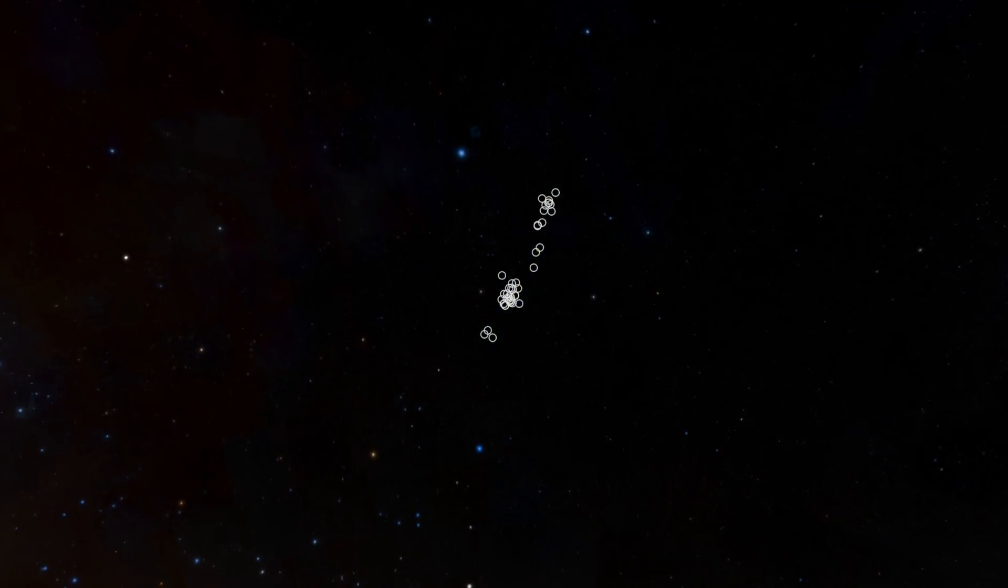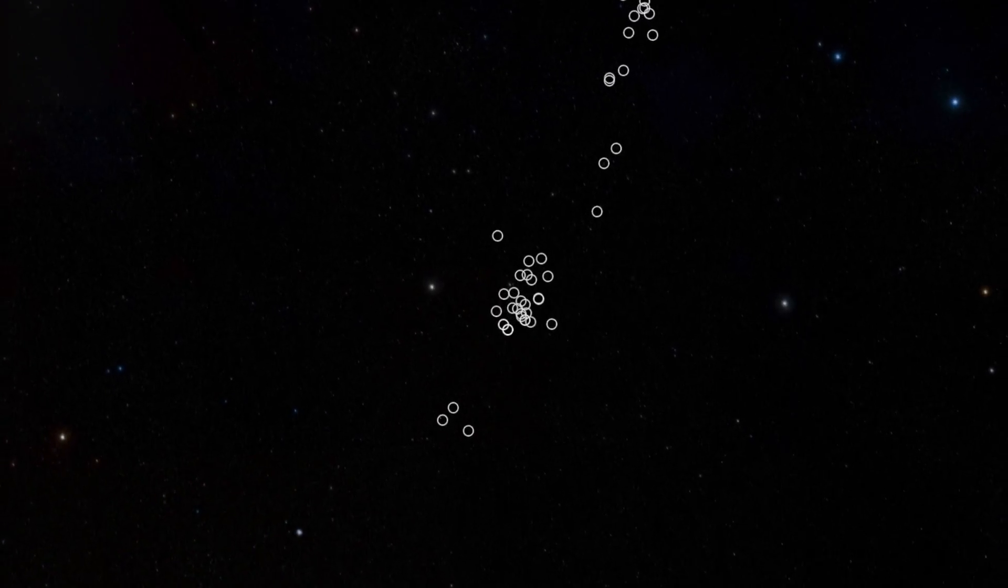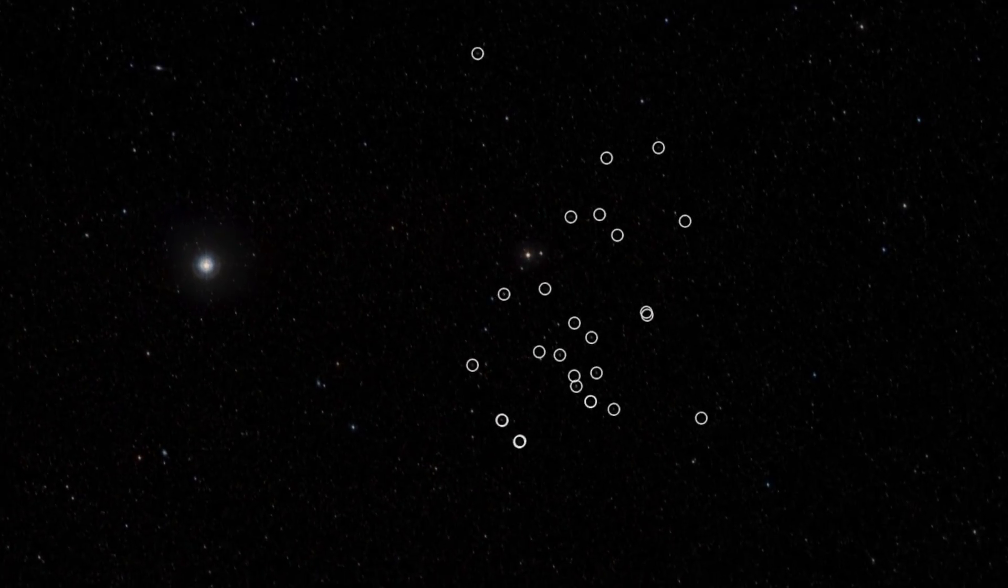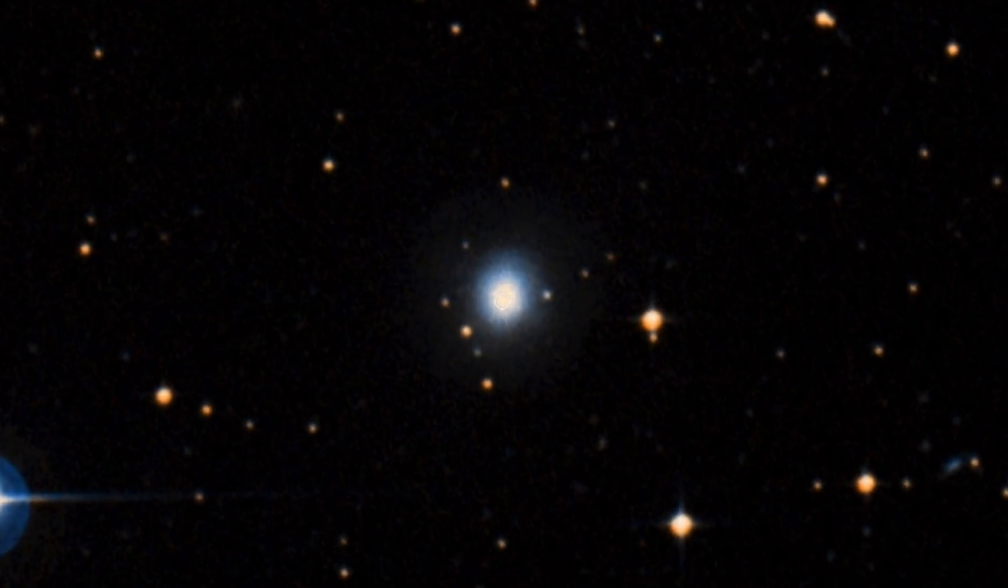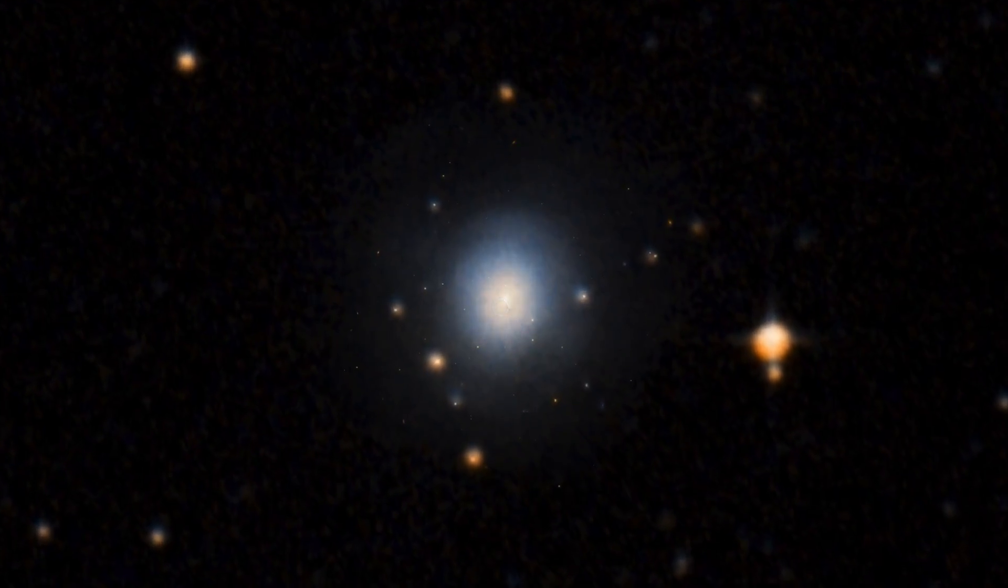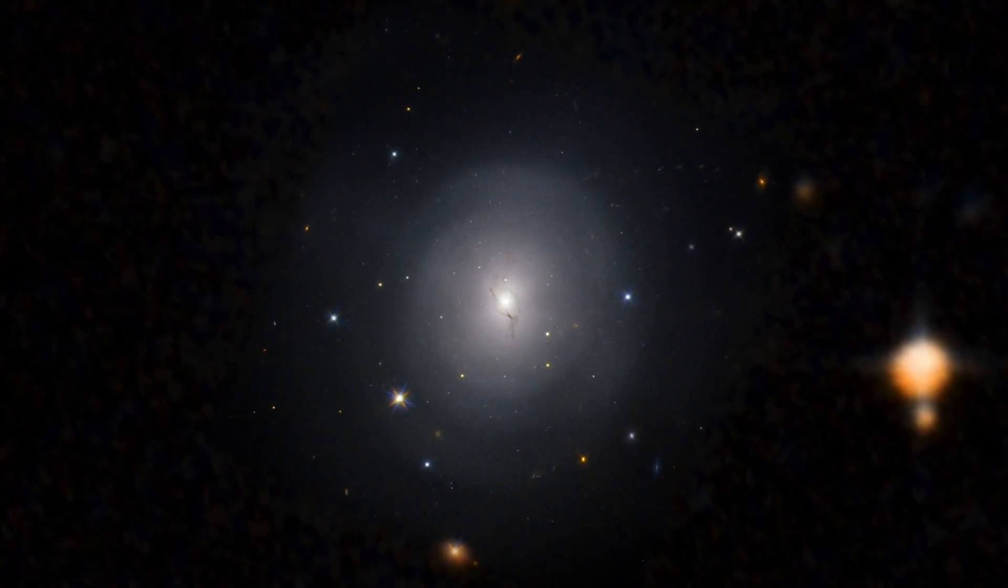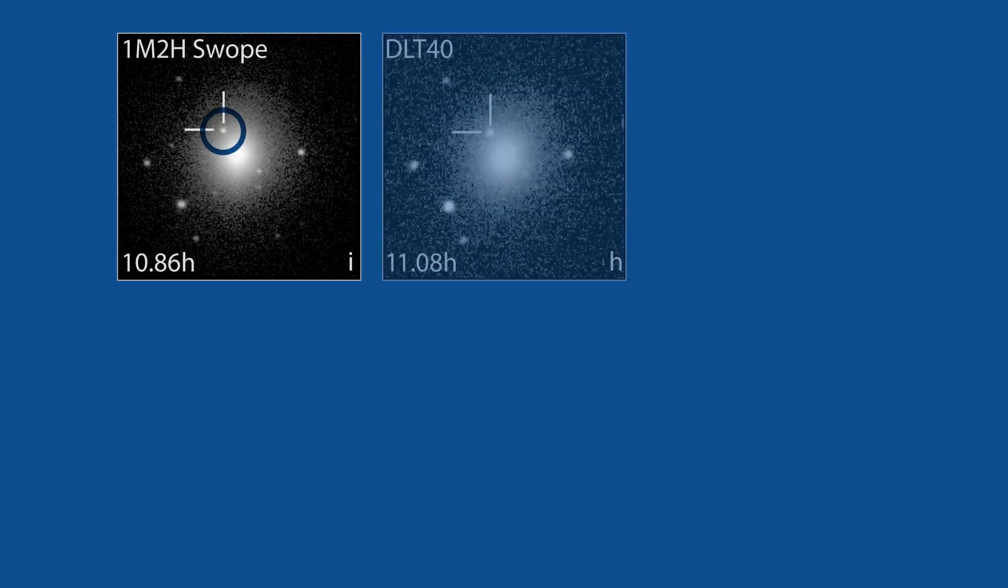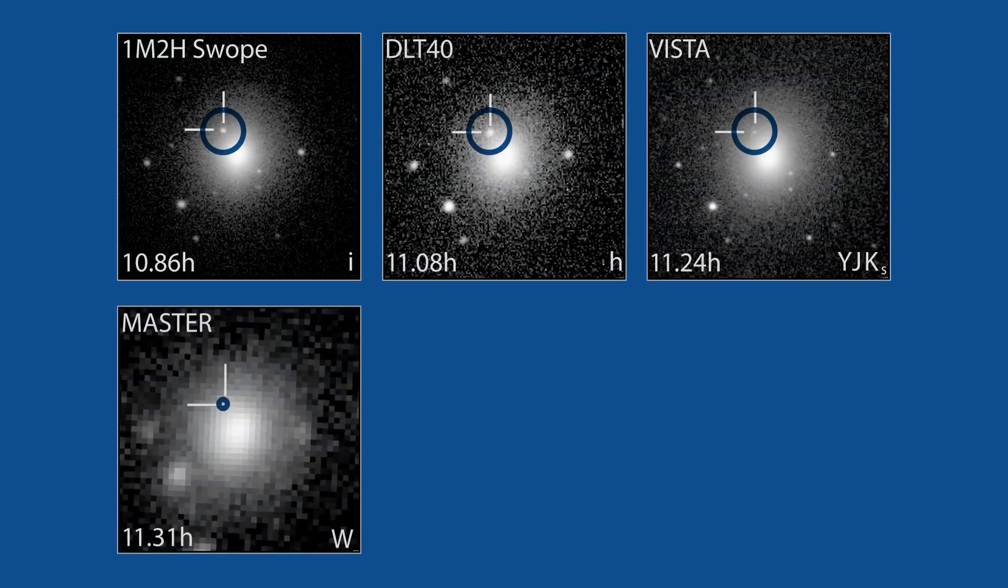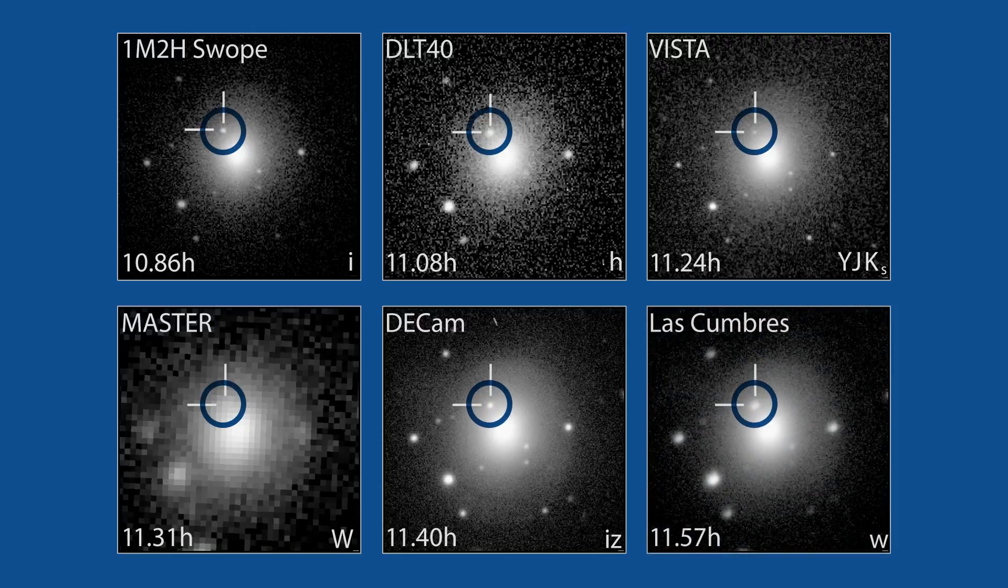Around 50 candidate galaxies were identified in this area for follow-up observations using optical telescopes. Less than 11 hours after the first detections, astronomers using the Carnegie Swope Telescope identified a previously unseen blip of light in the outer reaches of the galaxy named NGC 4993. Several independent confirmations were reported from other telescopes over the next hour. The first-ever optical counterpart to a gravitational wave event had been found.